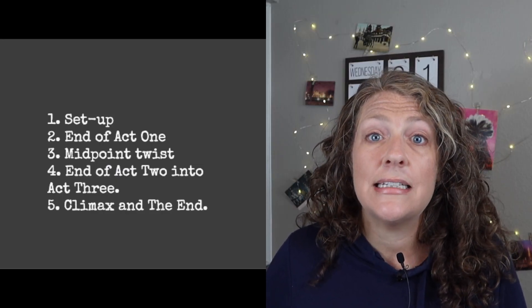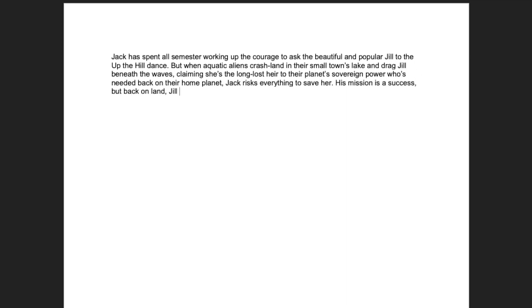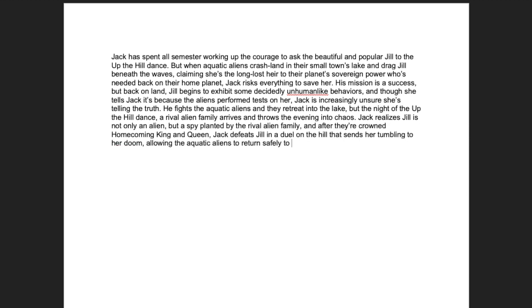So how is this paragraph going to be different from what you've got in step two? For one thing, you want to aim for a total of five sentences. The first sentence is the setup. The second sentence is the end of act one. The third sentence is the midpoint twist. The fourth sentence is the end of act two going into act three. And the fifth sentence is the climax and how things wrap up. In step two you hinted at the climax, but in a query letter or jacket flap copy you don't want to give the ending away. But in this summary, you do. So spoil it — write out the ending. Now we've got some structure: we can see the inciting incident, the midpoint twist, the climax, and the ending.